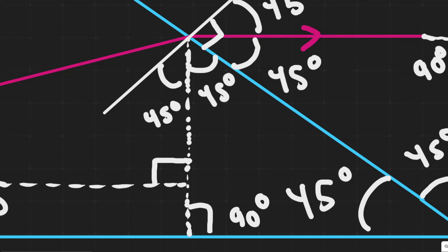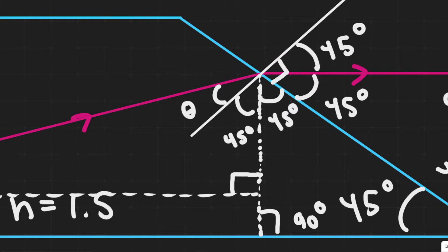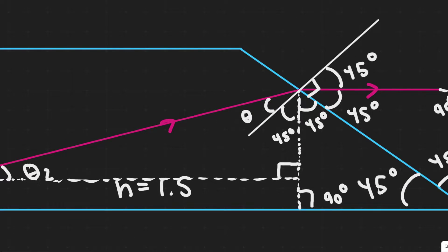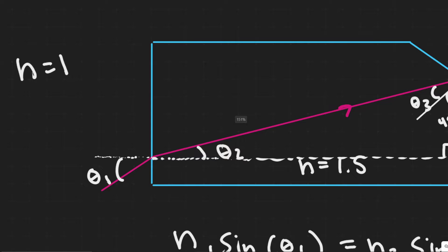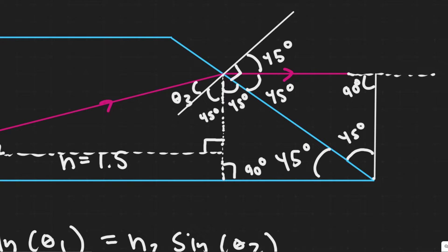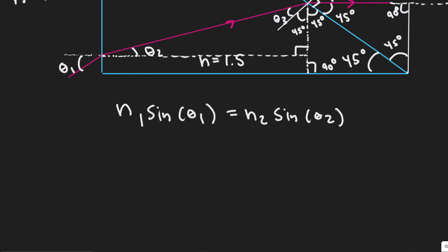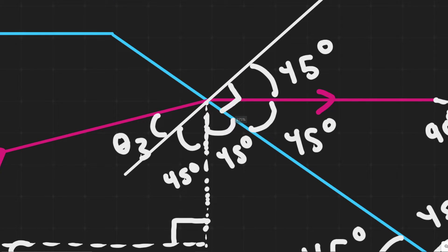If I can figure out what this angle is — I'll call it theta 3 — that's going to allow me to solve for theta 2, which allows me to use Snell's law to solve for theta 1. To find theta 3, we're going to use Snell's law again but in this scenario at the right face. So I'm going to say n3 sine of theta 3 equals n4 sine of theta 4. Snell's law tells us how light bends when traveling from one medium to another with different indices of refraction.